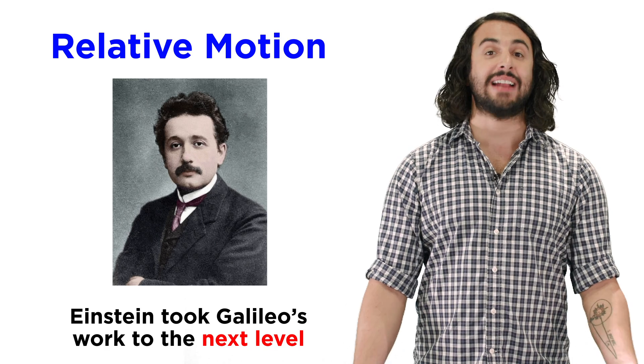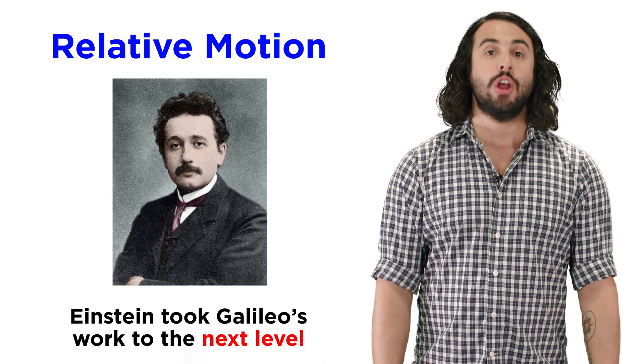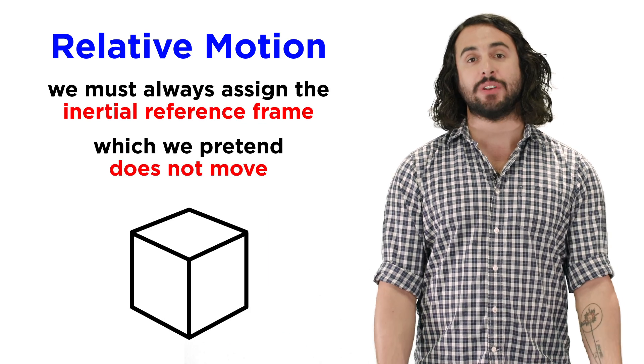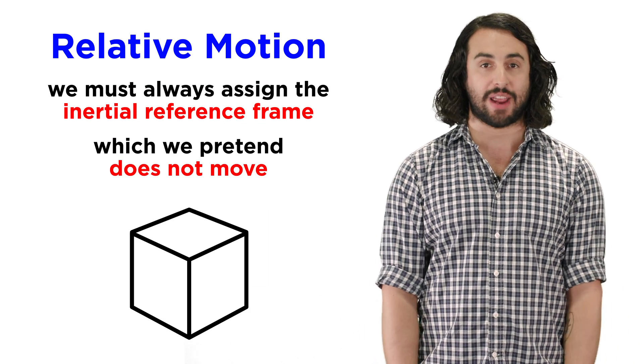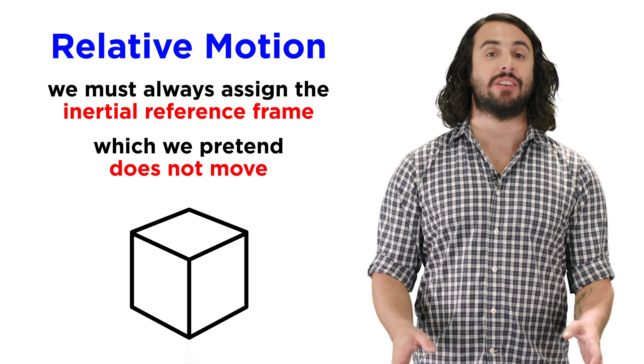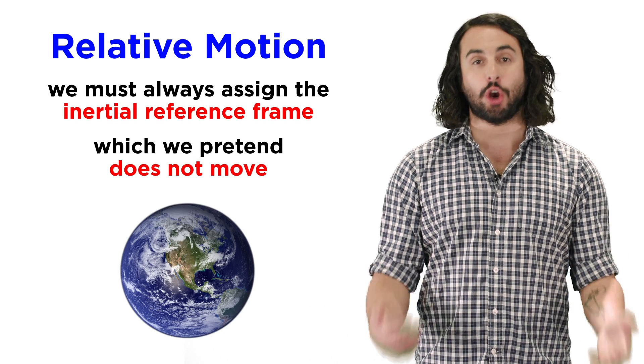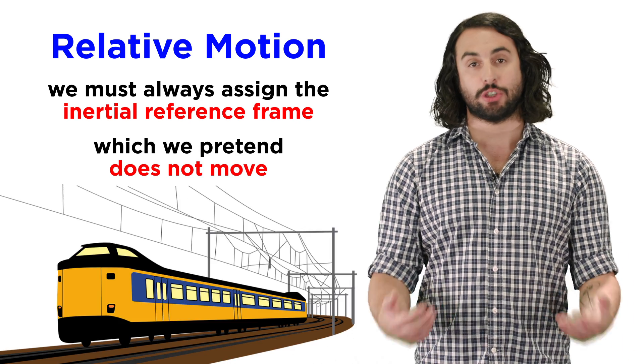When young Einstein got his hands on Galilean relativity, he gave it a huge facelift. The part that stayed the same was the importance of assigning inertial reference frames, which we pretend are motionless, while everything else is moving relative to that frame, which could be the earth, or a person, or a train.